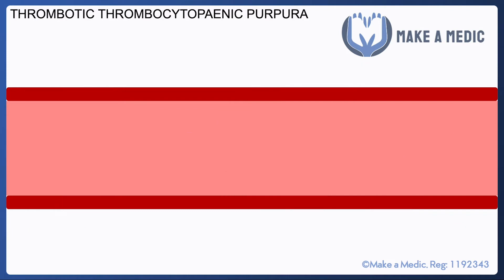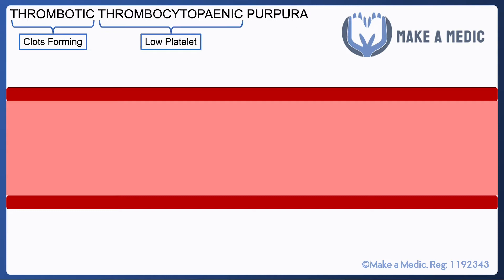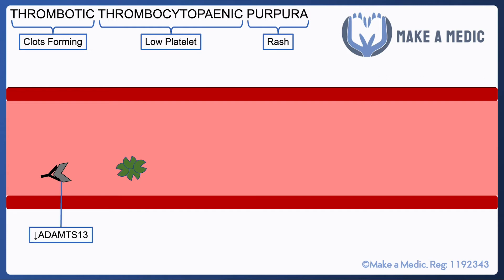Moving on to thrombotic thrombocytopenic purpura: the thrombotic part suggests that there are clots forming, thrombocytopenic suggests low platelets, and purpura suggests some sort of purpuric rash. Remember, von Willebrand factor multimers are quite sticky and can attach onto the endothelium even when it's not damaged, causing a platelet plug to form. Normally, ADAMTS13 would break down the multimers into monomers, however in TTP we get antibodies generated against ADAMTS13, which prevents it from carrying out this role.